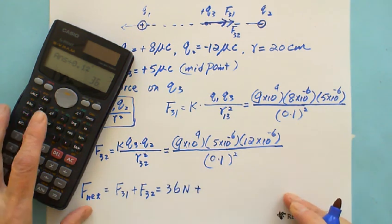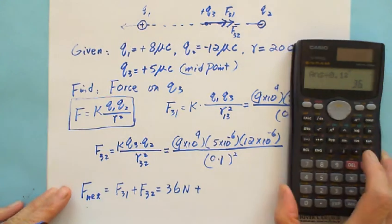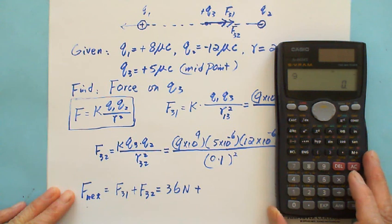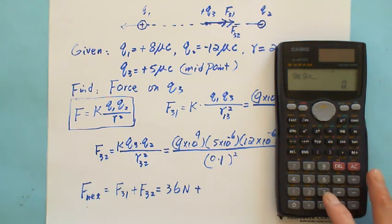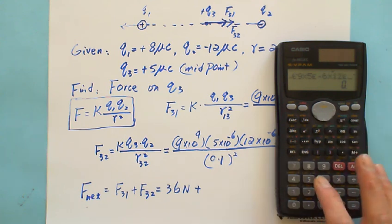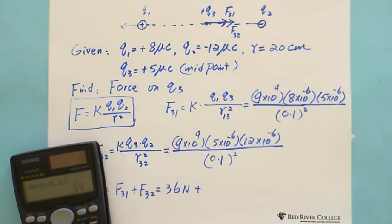Plus F32, we can also calculate: 9 times 10 to the 9 exponent, multiply 5, exponent negative 6, multiply 12, exponent negative 6, equal, divide by 0.1 squared. We get 54 Newton.